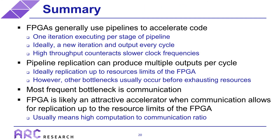FPGAs most commonly outperform other accelerators for applications where I/O or memory bandwidth bottlenecks can be avoided, allowing for pipeline replication up to the resource limits of the FPGA while achieving the ideal initiation interval of one. In summary, FPGAs generally use pipelines to accelerate code, with one iteration per pipeline stage and ideally a new iteration starting and a new output leaving every cycle. We can replicate pipelines up to the resource limits of the FPGA to further improve throughput, but in practice you will often run into communication bottlenecks first.